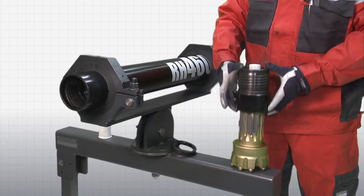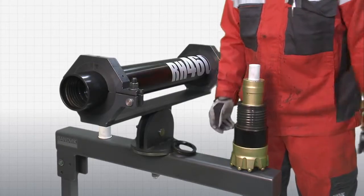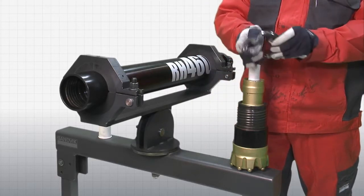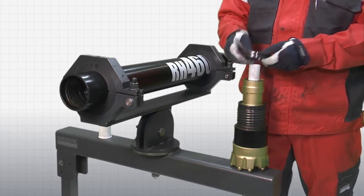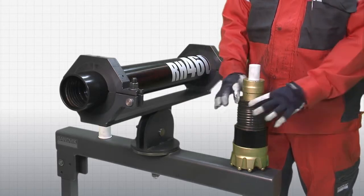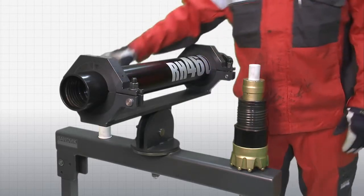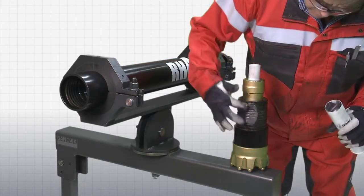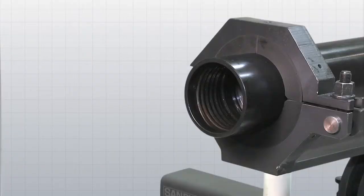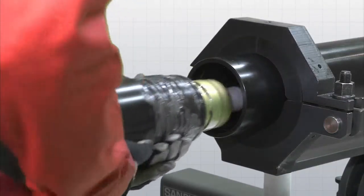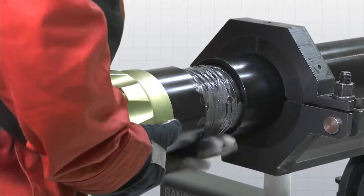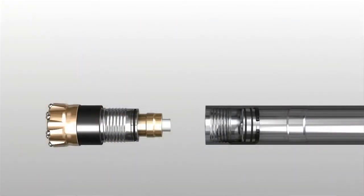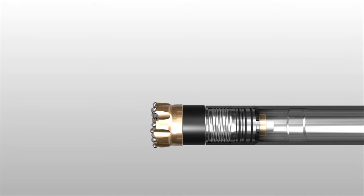Slide the driver sub over the bit shank. Now fit the bit retaining ring and O-ring and grease the threads before installing the driver sub into the hammer's bottom end. Make sure there is a gap between the driver sub and the piston case.